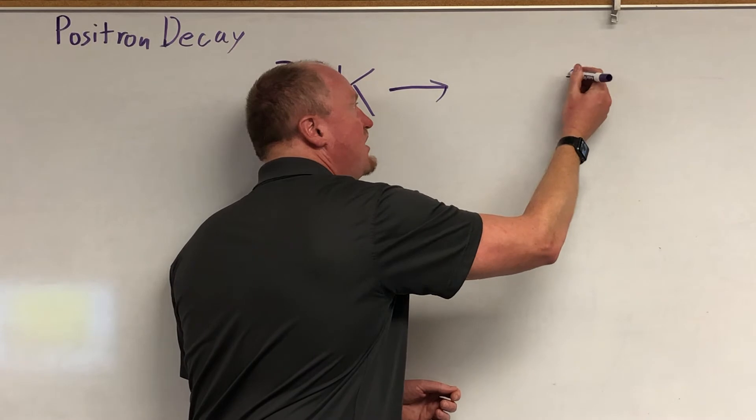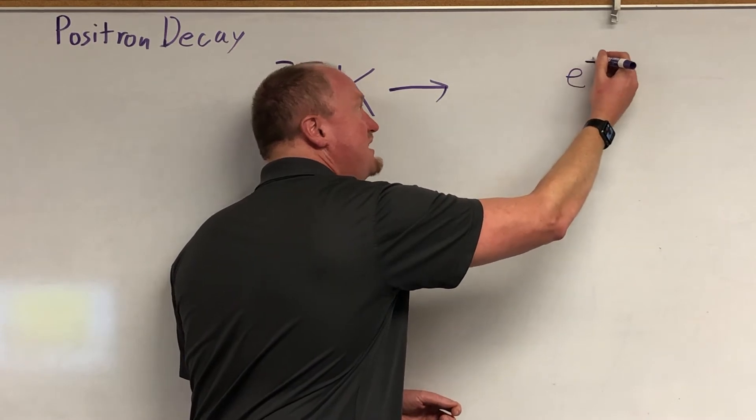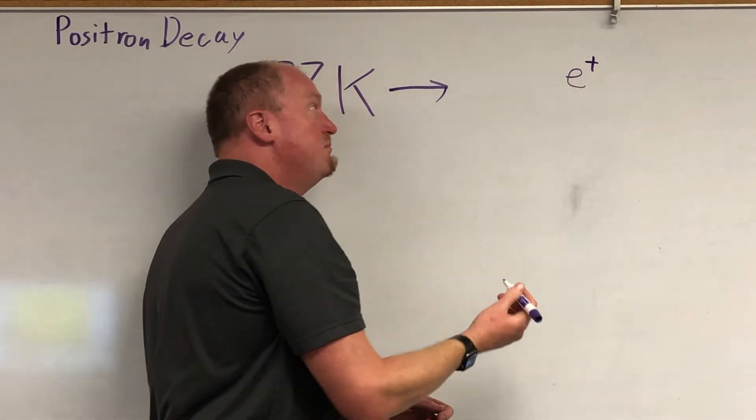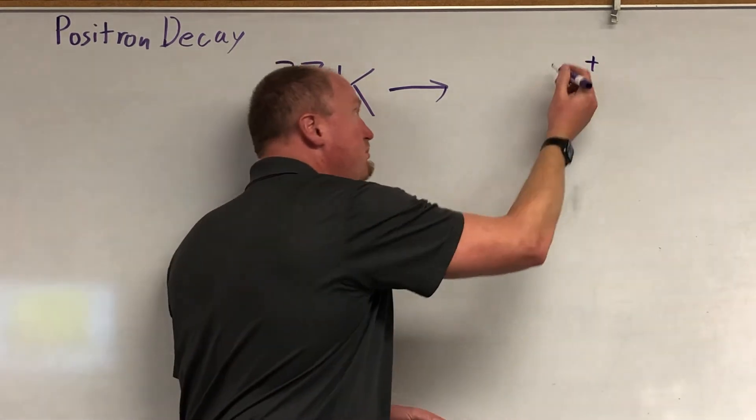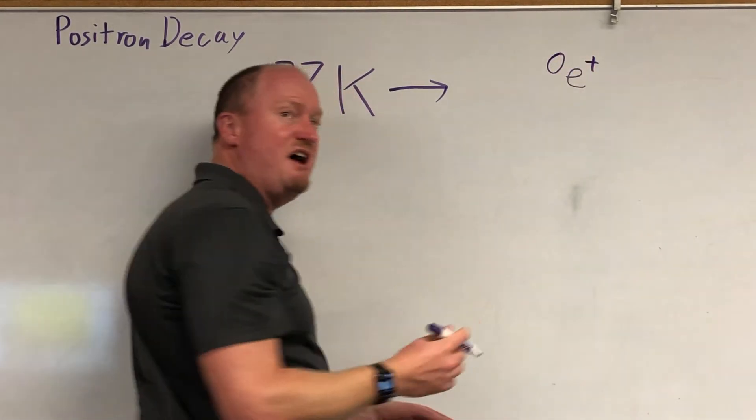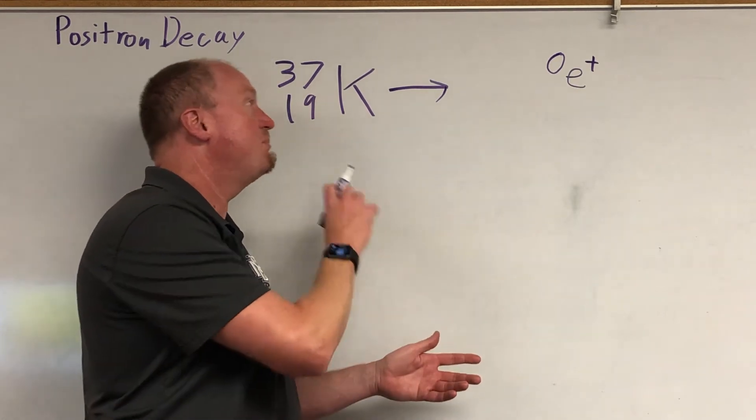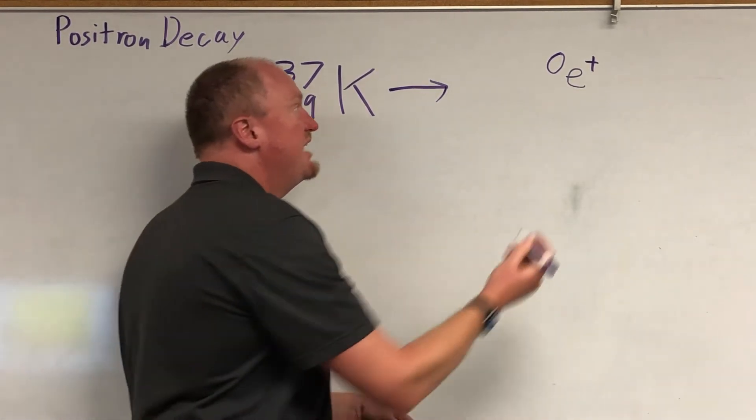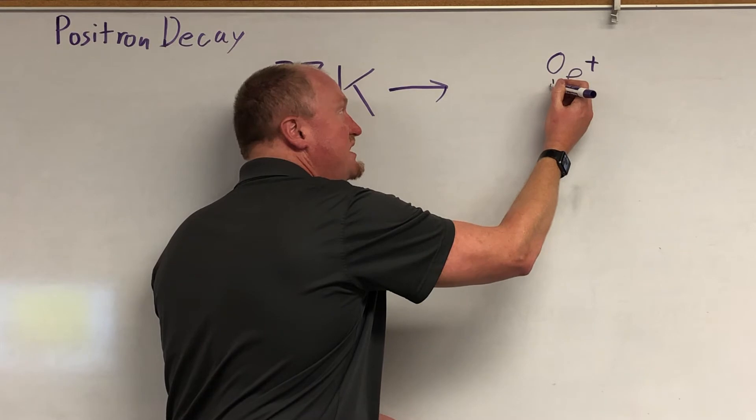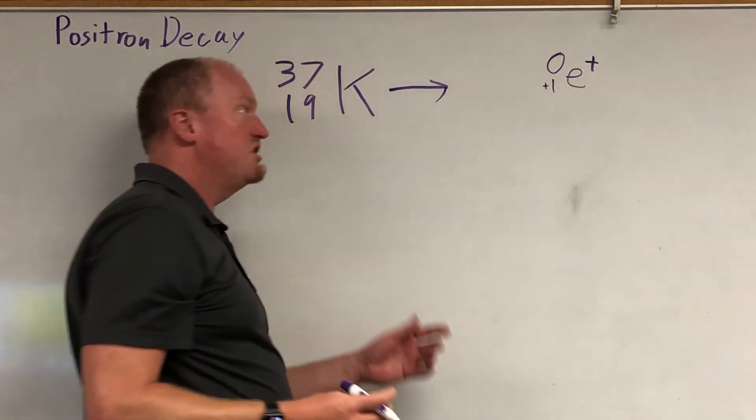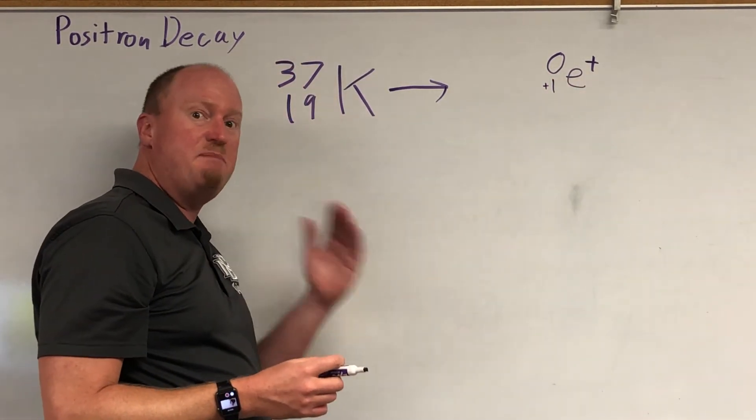So you're going to get this electron. It's not negative. It's positive, but like a regular electron, no mass, at least not enough mass to be of consequence. Because it does have mass, but nothing compared to a proton or a neutron. And instead of being a negative one, it's actually a positive one. So making very clear, this is a positron.